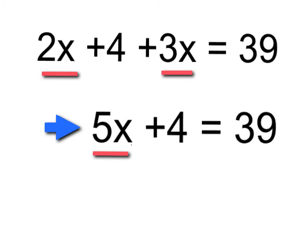Notice nothing was added to the 4, because the 4 and 3x and the 4 and 2x are not like terms. 2x and 3x are like terms here. Numbers are like terms with one another. Now what I have is a two-step equation.